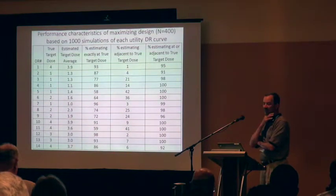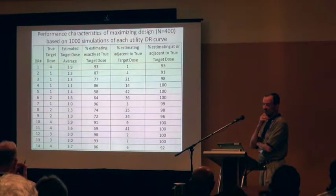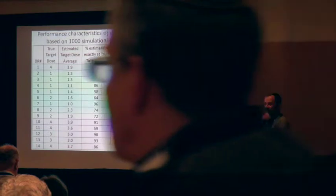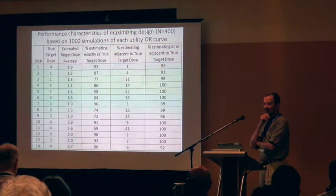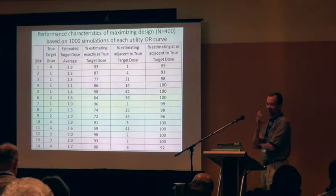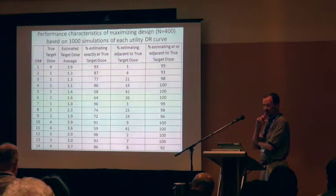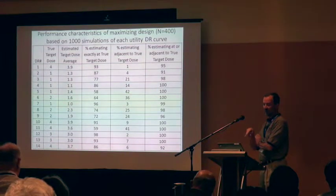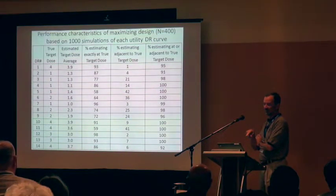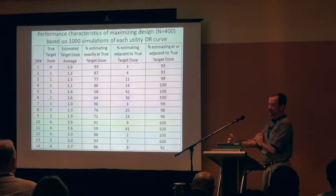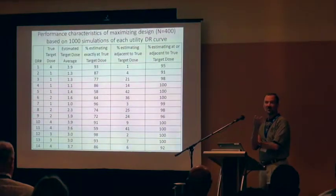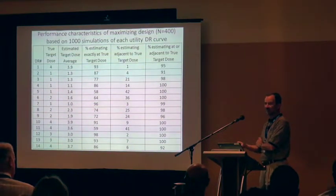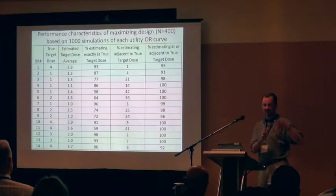This slide shows the average estimated target dose next to the true target dose — scanning down those columns shows it was estimating close to the target. The percent of simulations that correctly identified the target dose is in the fourth column. They're generally high, and when they're not, the percent estimating adjacent to the target dose was high, so the percent at or adjacent was very high. Now, there were only four doses, so it's not that hard, but the key is that it's avoiding the place you don't want to be.